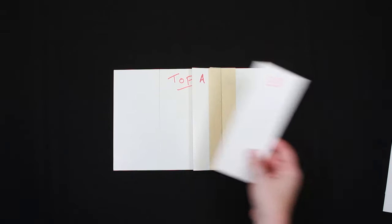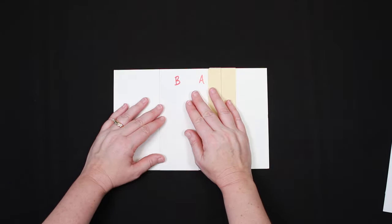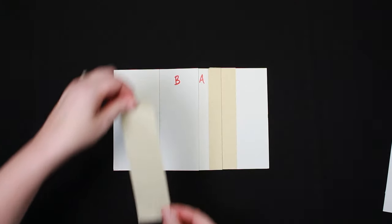Next we will align and secure piece B to the base. Secure this with tape on both sides.